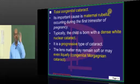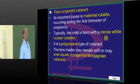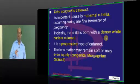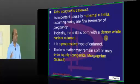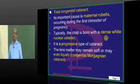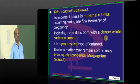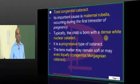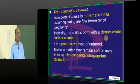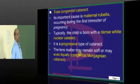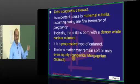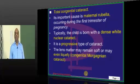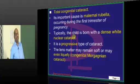Total congenital cataract is often a consequence of maternal rubella, particularly when rubella affects the first trimester of pregnancy. The child is born with a dense white nuclear cataract. Unlike other developmental cataracts which are usually non-progressive and static, rubella-associated total congenital cataract is progressive — it will soften, liquefy, and lead to a Morgagnian cataract.